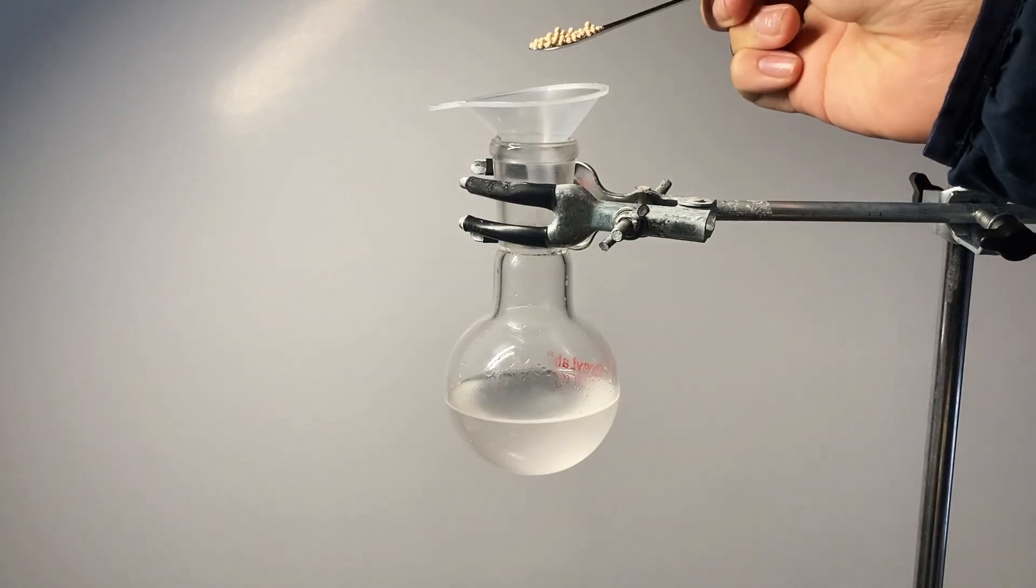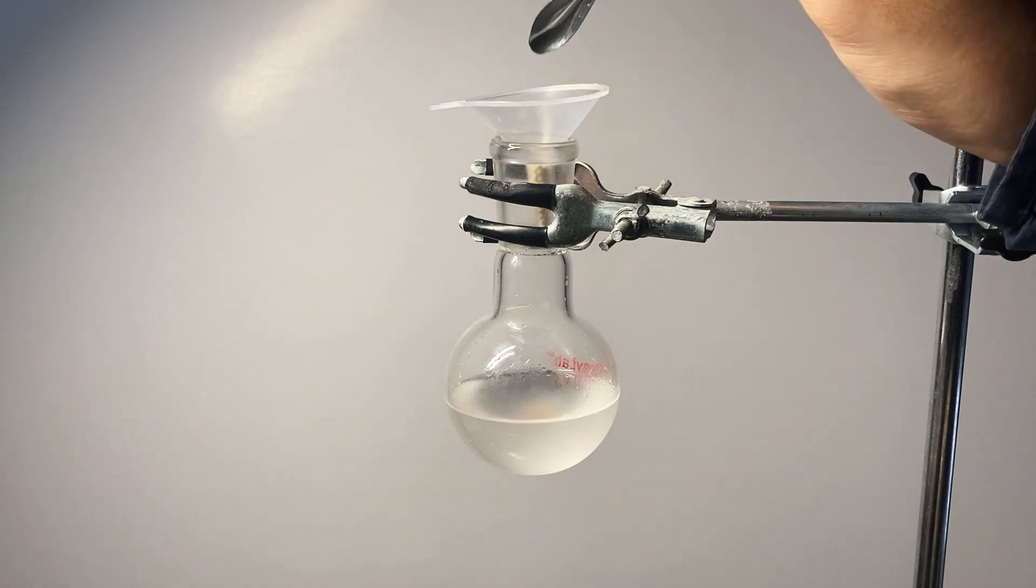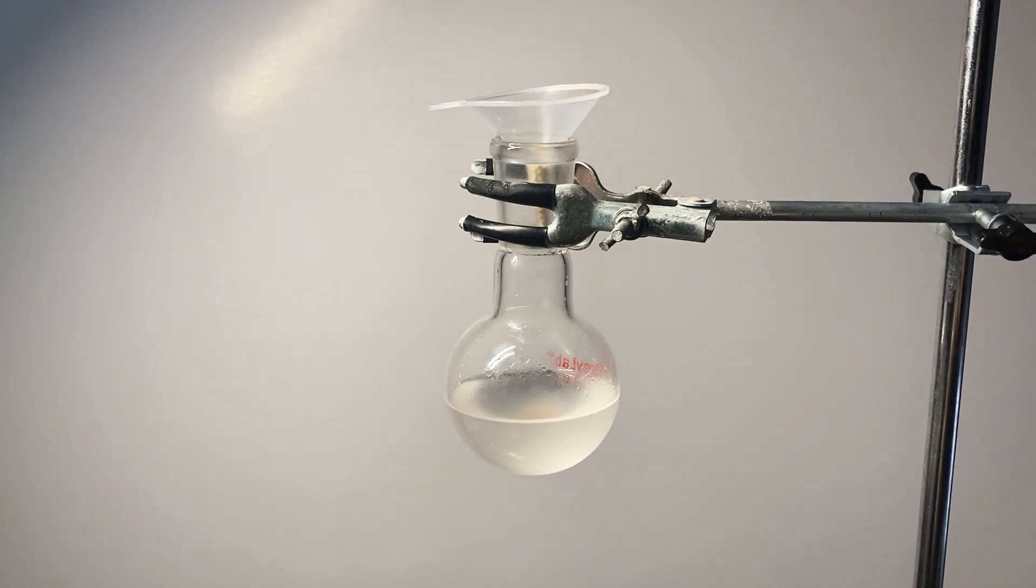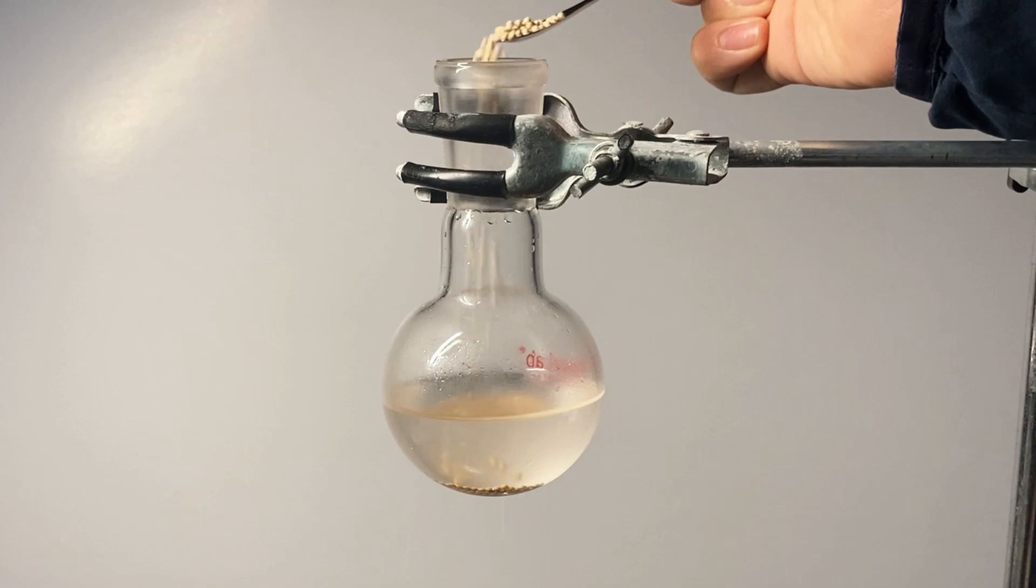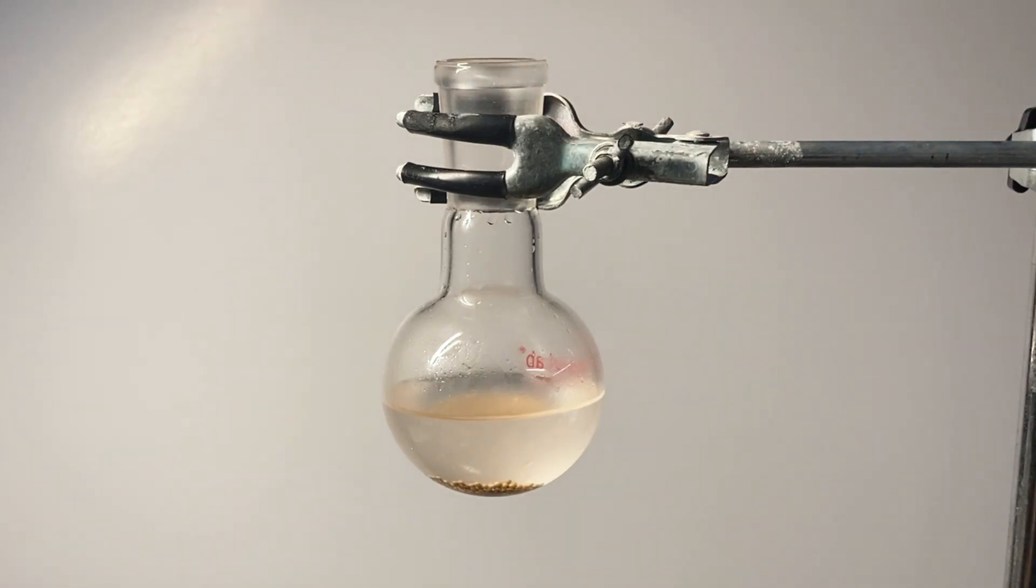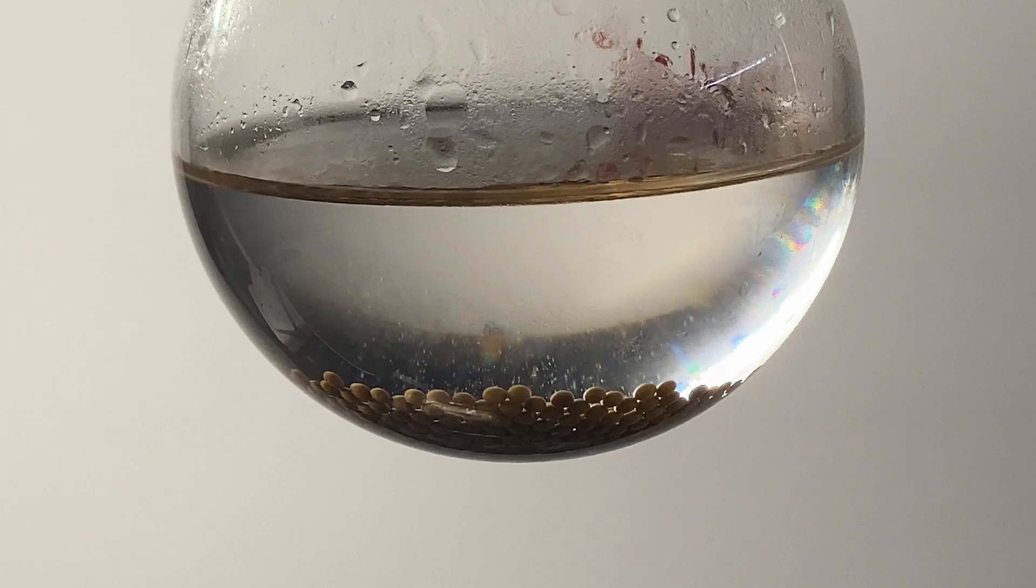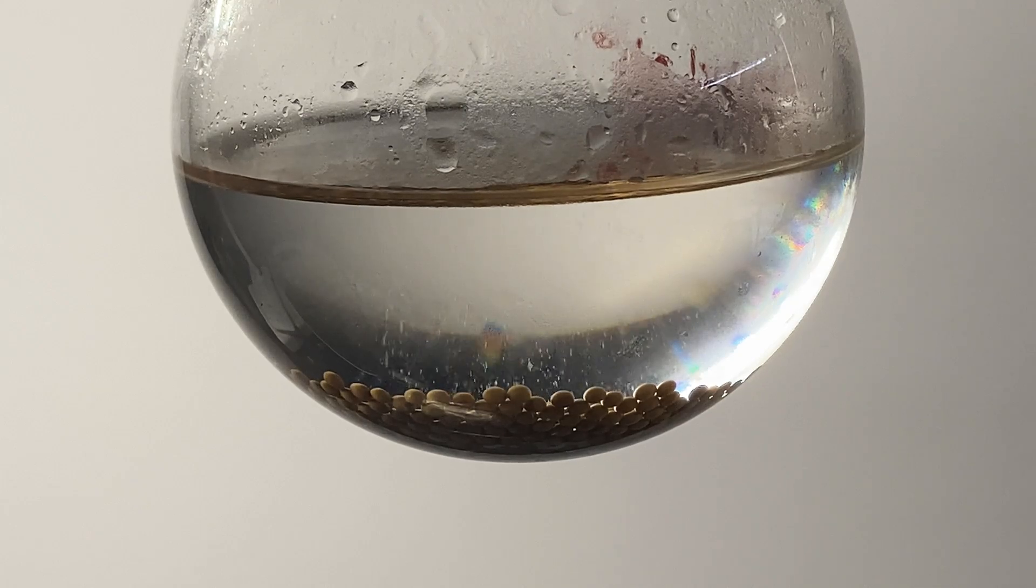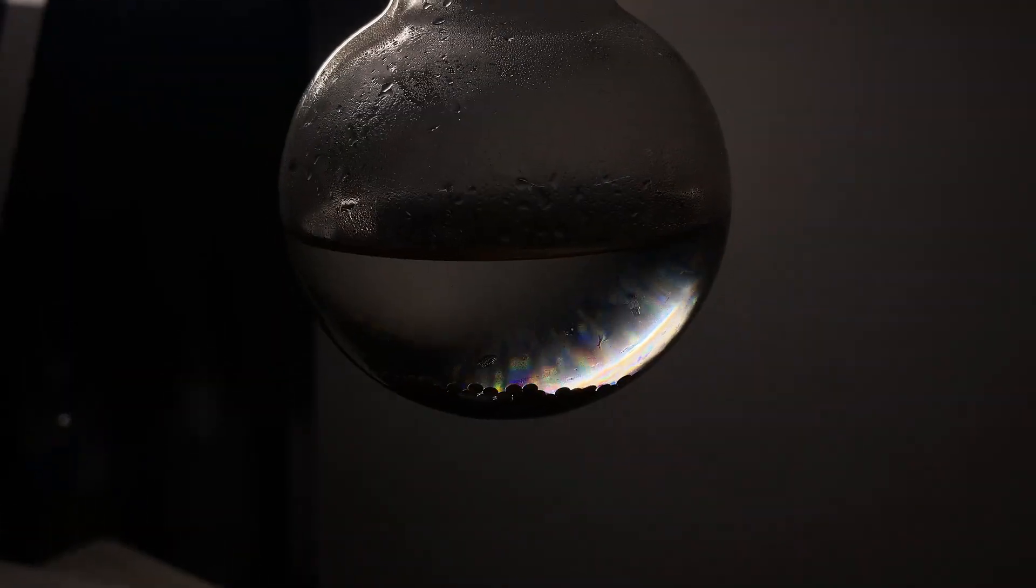The reason the benzene is cloudy is because there's still some water in it, and this can be fixed by putting in some 3A molecular sieves, which absorb all the moisture. Immediately, a bunch of bubbling happened, meaning it was working. I left it here for about an hour or so until it became perfectly clear.